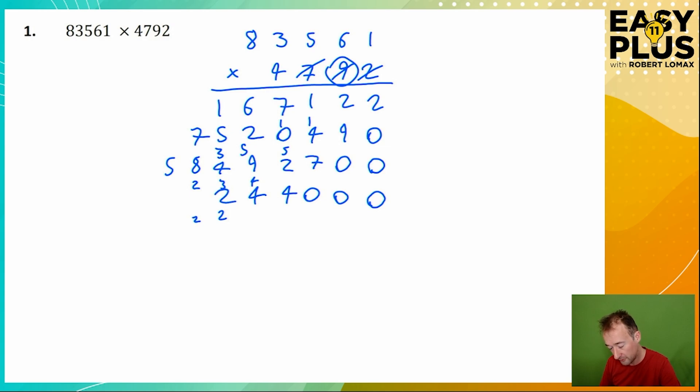4 times 3 is 12, with the carried 2 we have 14. 4 times 8 is 32, with the carried 1 we have 33.